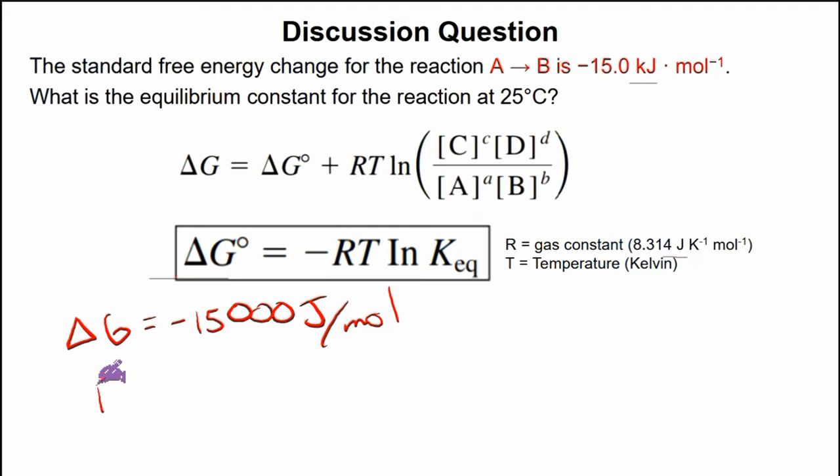We also need to calculate for our temperature. Our temperature is given as 25 plus 273 because our temperature, keep in mind, is in Kelvin. So we have to add 273 to that. And that gives us 298 Kelvin. We now have the given constants, the given variables in our equation.